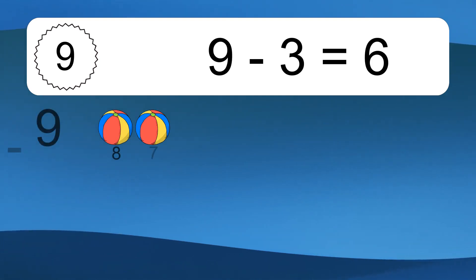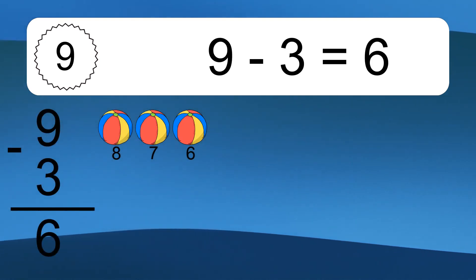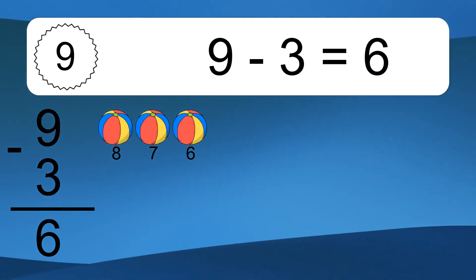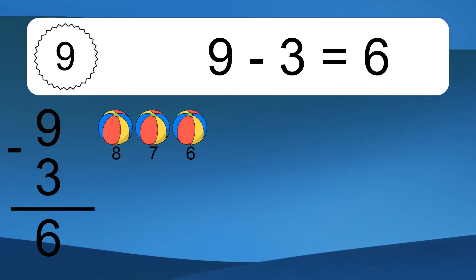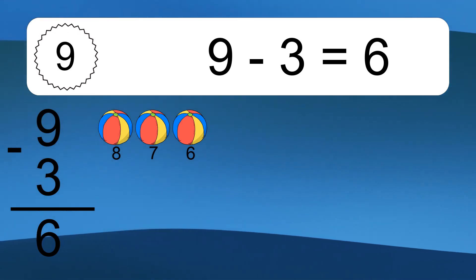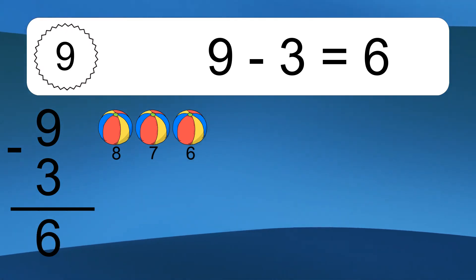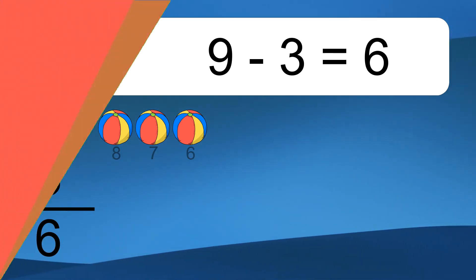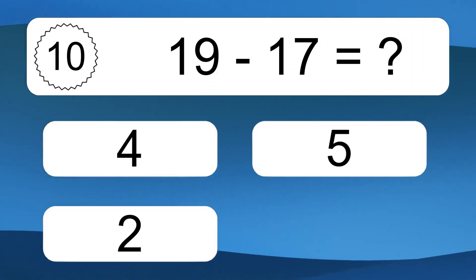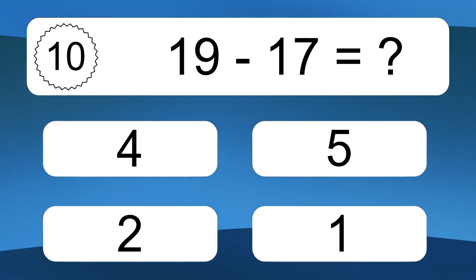9 minus 3 equals what? 9 minus 3 equals 6. Let's count it: 8, 7, 6.